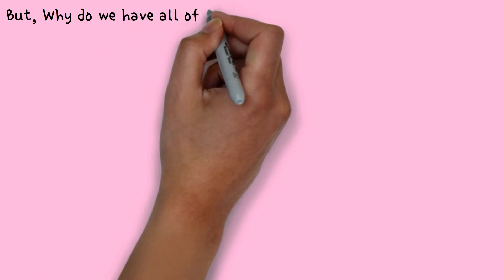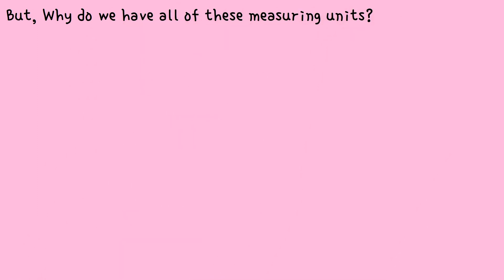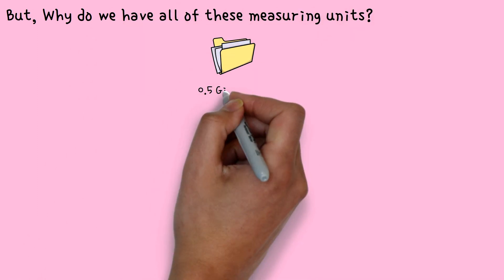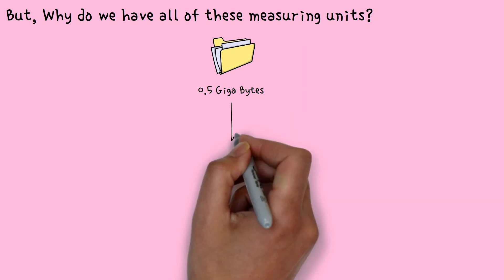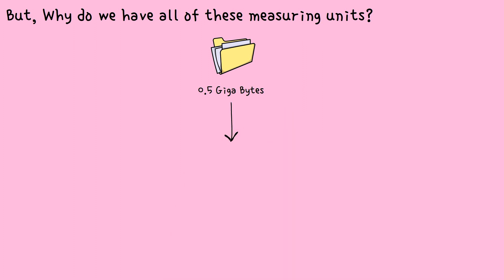But why do we have all of these measuring units? Suppose we have a folder which is 0.5 gigabytes. This number might seem simple, but if it was in bits or bytes, the number would have been way more complex and more confusing.